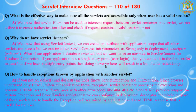The next question is: why do we have servlet listeners? Using the servlet context we can create an attribute with application scope that all other servlets can access, but we can initialize the servlet context init parameters as a string only in the deployment descriptor. What if our application is database-oriented and we want to set attributes in the servlet context for database connections? If your application has a single entry point you can do it in the first servlet request, but if you have multiple entry points then doing it everywhere will result in a lot of code redundancy. Also, if a database is down or not configured properly, we won't know until the first client request comes to the server. To handle these scenarios, the servlet API provides listener interfaces that we can implement and configure to listen to events and then perform certain operations.